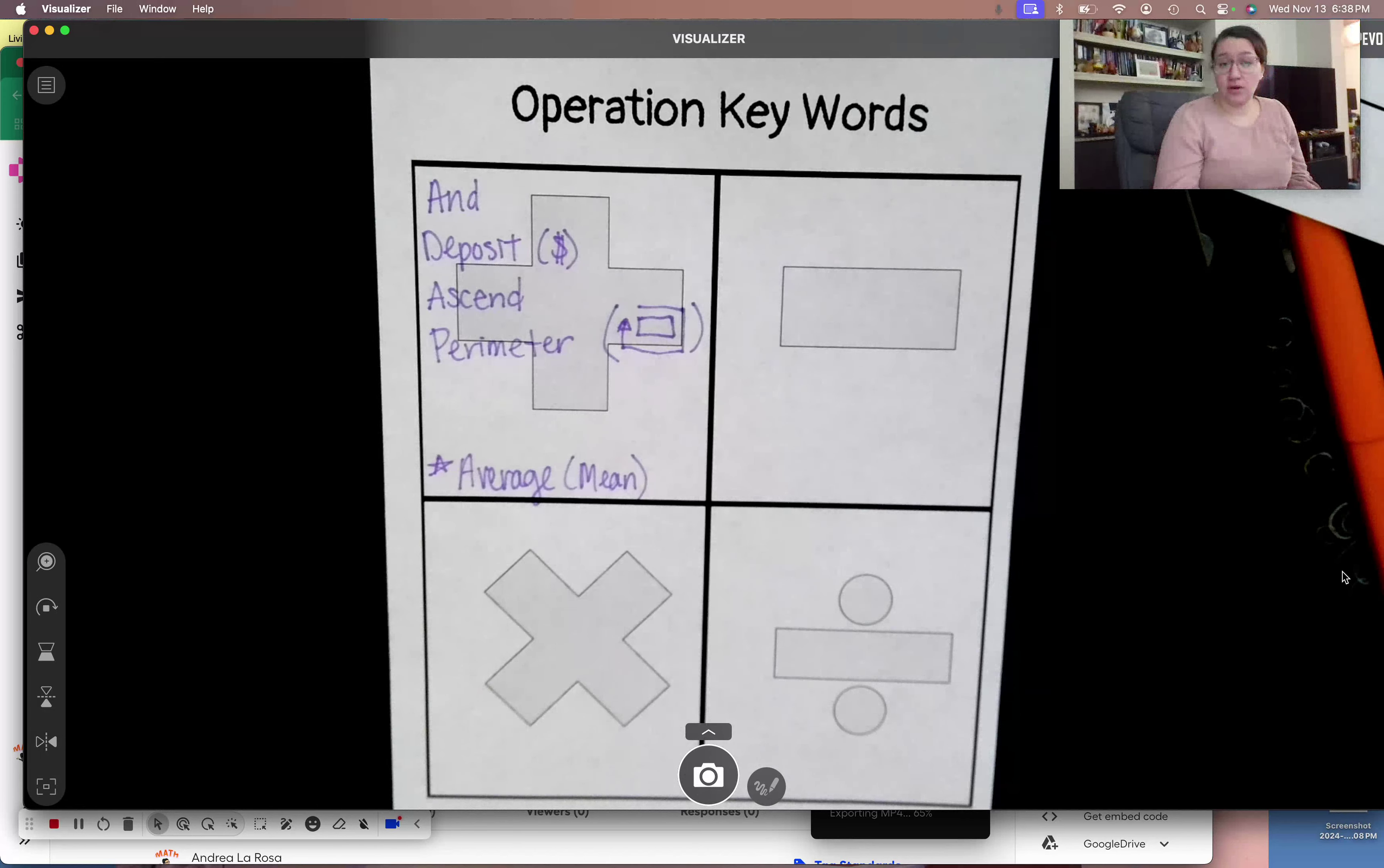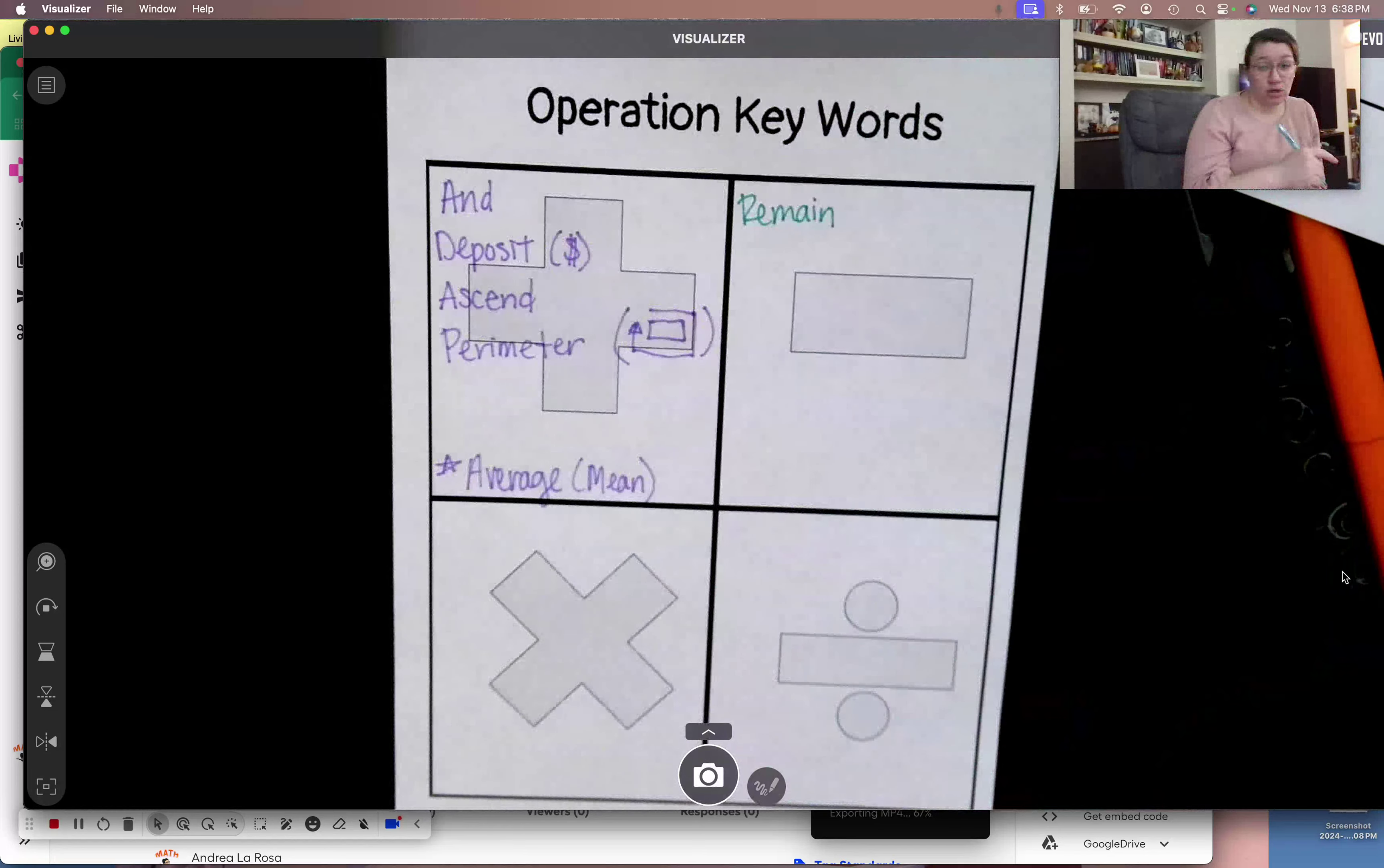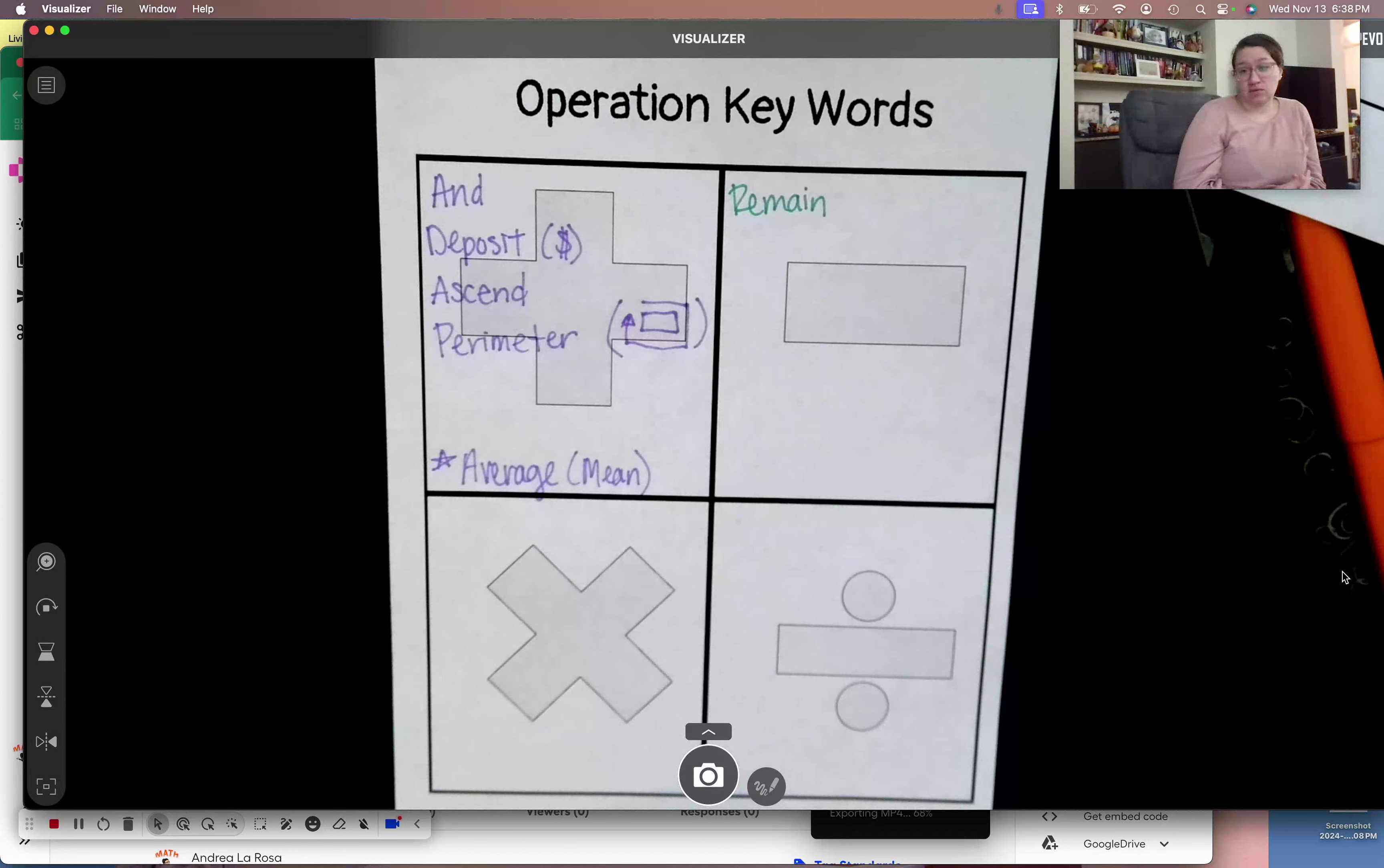I'm going to move over into subtraction words. Again, these are not all of the words. I'm just going to have you guys write down the ones that have been tricking kids up the most. Remain. Remain is like how much is left. Not remainder. Remainder is for division. But just remain is like I have 10 pieces of candy. I eat seven. How many remain?